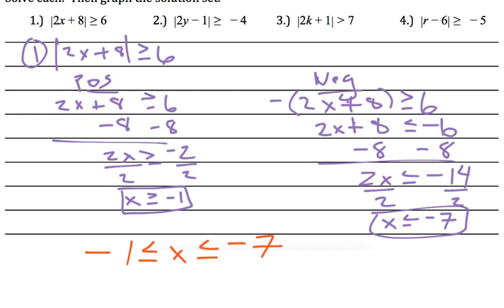You know what's greater than negative 1? 0. But 0 is not less than negative 7. So I'm not sure this will work out where we can write it in one line of math. So let's set up our number line.